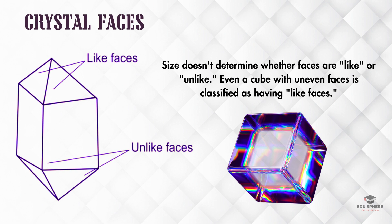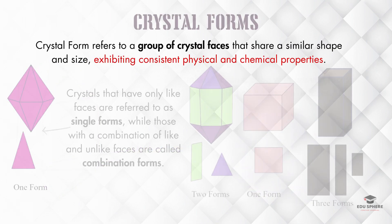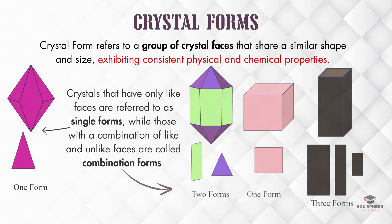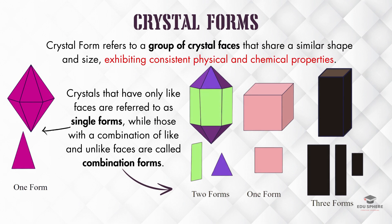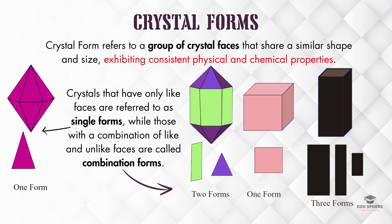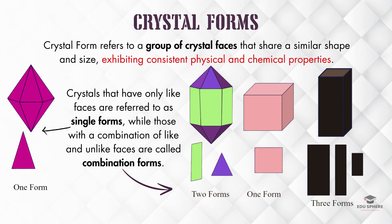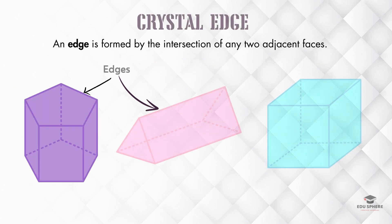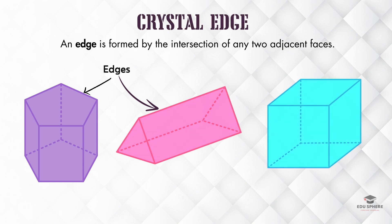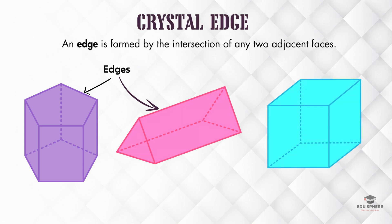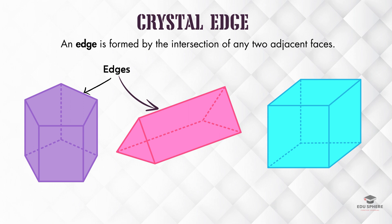So, we can say that like faces have the same properties, and unlike faces have different properties. Crystals with only like faces are called single forms, whereas those with a mix of like and unlike faces are known as combination forms. Moving on, where two faces meet, we get a crystal edge. Edges are always straight because they follow the intersection lines of the faces.